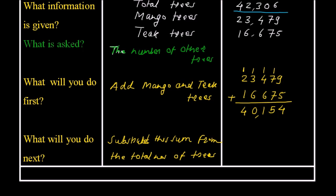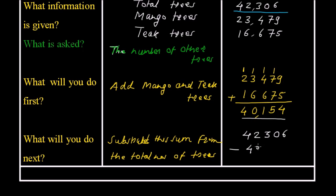So the total number of trees is 42,306 minus the mango and teak trees which are 40,154.